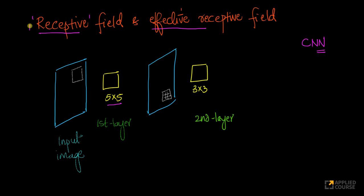A receptive field — let me define this term first, then I'll discuss the effective receptive field. A receptive field is basically, at any point, the region the convolutional operation works on. How does this work? At any point, I'll take this convolutional filter or kernel, pass it through various parts of the image, and for each part I generate an output. A receptive field is that part of the image which the convolutional kernel operates on at a given point in time.